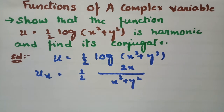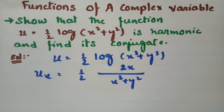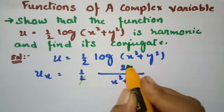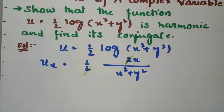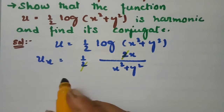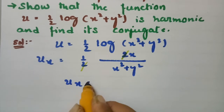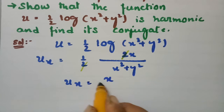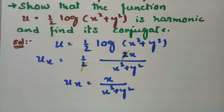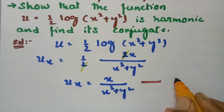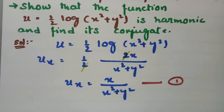Cancelling the 2, the first derivative ux = ∂u/∂x equals x/(x²+y²). This is equation number 1. Now I need to compute the second derivative with respect to x.